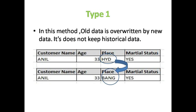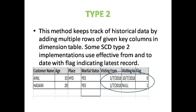What is Type 1? In Type 1, old data is overwritten by new data. It does not keep any historical data. The example here is a customer table having customer name, age, place, and marital status. The place is Hyderabad, but after few days the customer transferred to Bangalore, so the place changed from Hyderabad to Bangalore. In Type 1, historical data is not available, so instead of Hyderabad it is replaced with Bangalore.